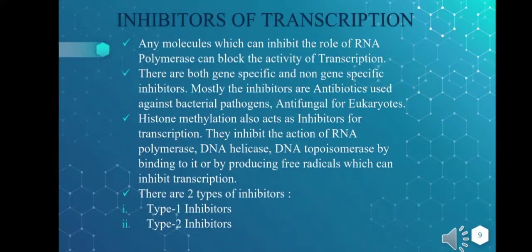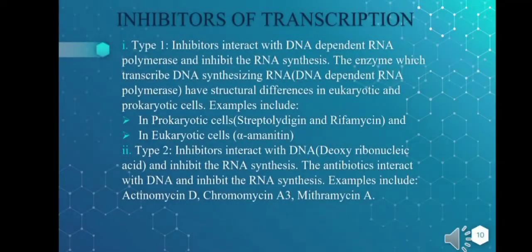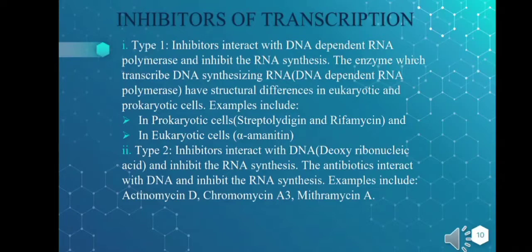There are two types of inhibitors. Type 1 inhibitors interact with the DNA-dependent RNA polymerase and inhibit RNA synthesis. The enzyme that transcribes DNA has structural differences in eukaryotic and prokaryotic cells. Examples in prokaryotic cells include streptolydigin and rifamycin; in eukaryotic cells the example is alpha-amanitin. Type 2 inhibitors interact with the DNA itself and inhibit RNA synthesis. Examples include actinomycin D, chromomycin A3, and mithramycin.